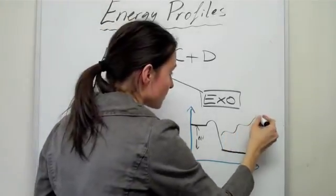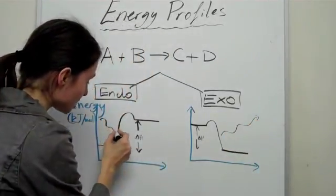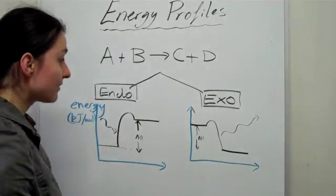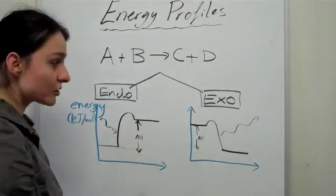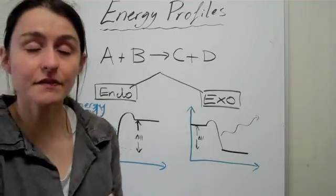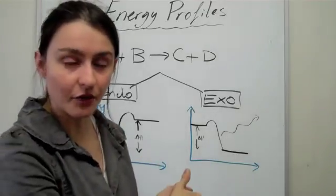As you can see, the energy gets released into the surroundings. In this case, we need energy from the surroundings. So those two are examples of how we get the energy profiles and the difference between the two exothermic and endothermic cases.